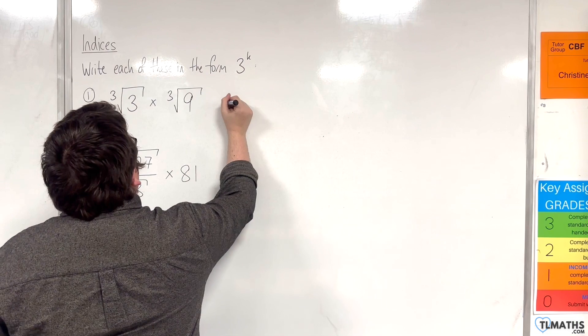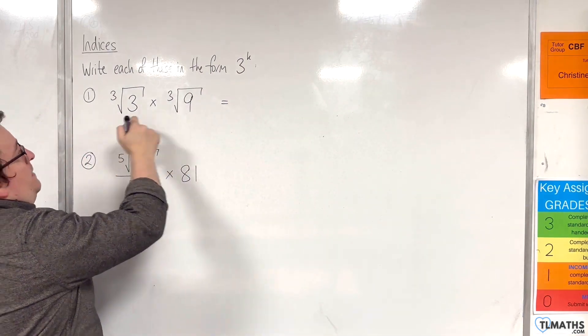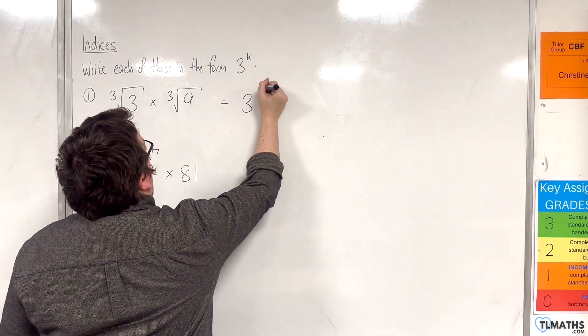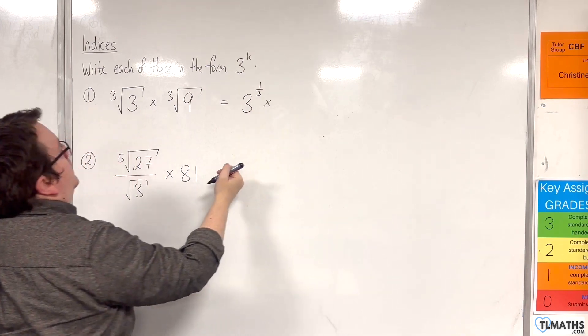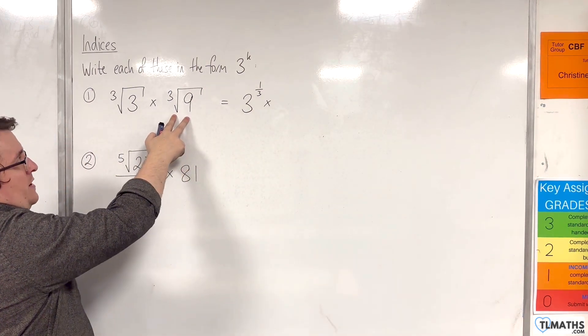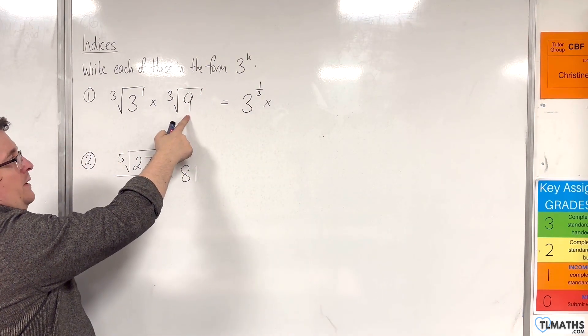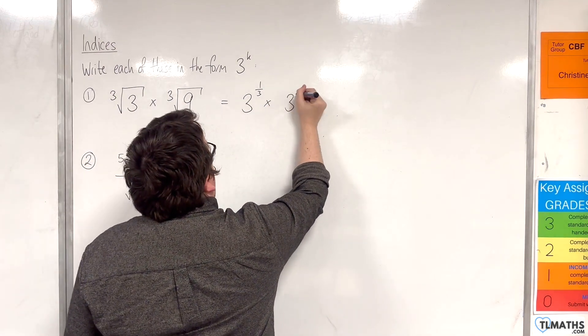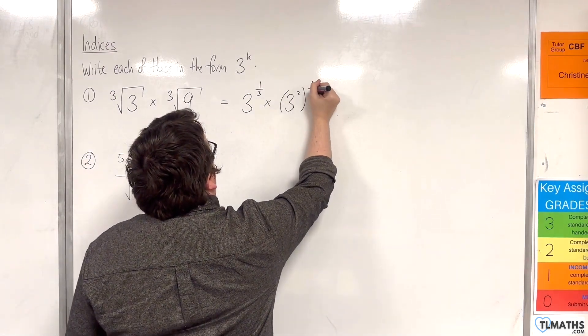So, with example number 1, we have the cube root of 3, which we can write as 3 to the power of 1 third. Then we have the cube root of 9. Now, 9 is 3 squared, so I can write that as 3 squared all to the power of 1 third.